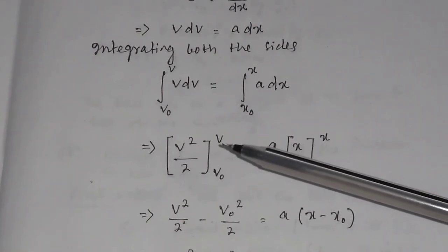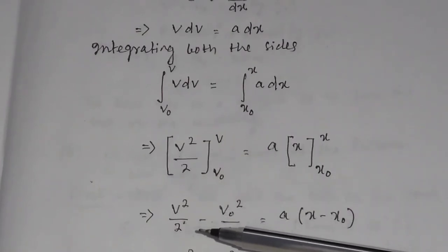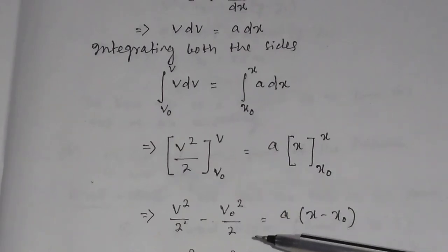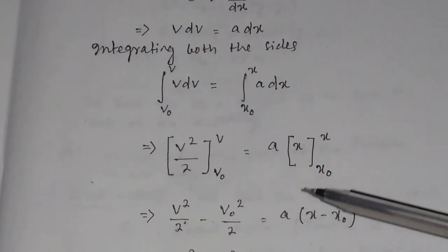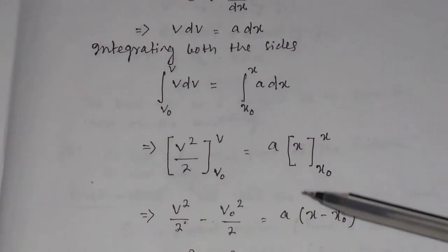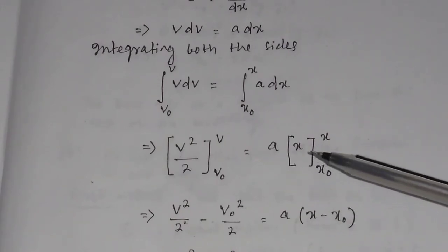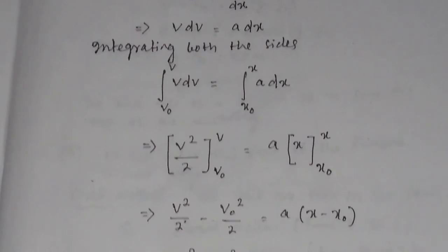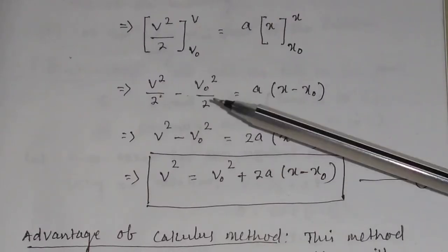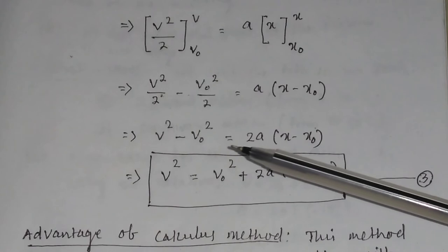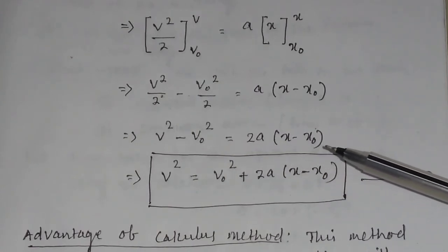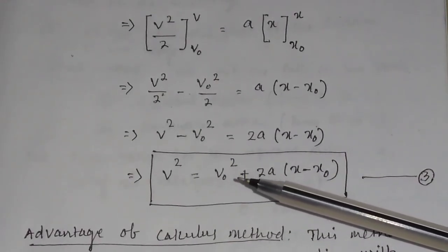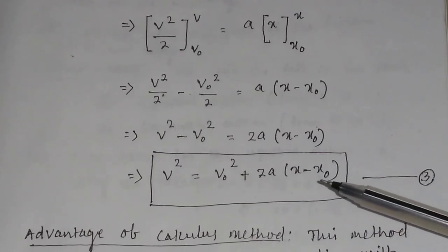Substituting the upper integral first: V²/2, minus the lower integral V₀²/2, equals A into (x minus x₀). So V² minus V₀² equals 2A into (x minus x₀), or V² equals V₀² plus 2A into (x minus x₀). This is the third equation of motion.